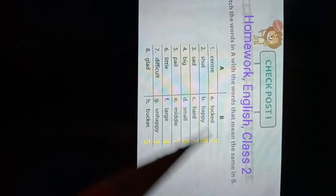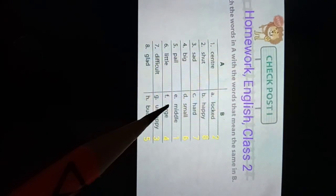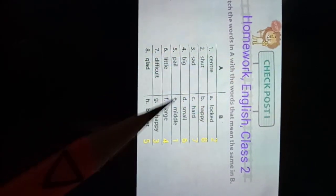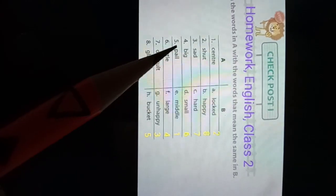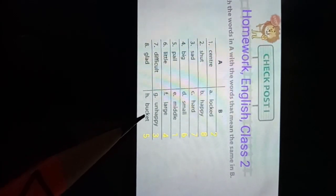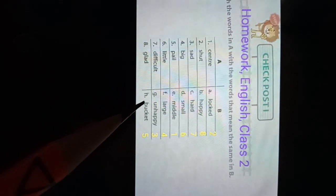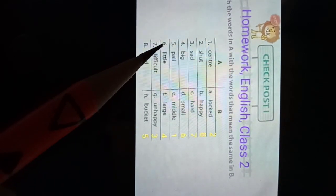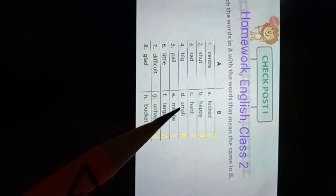Number five: pale means bucket. Number six: little is small. Number seven: difficult is hard. Number eight: glad is happy.